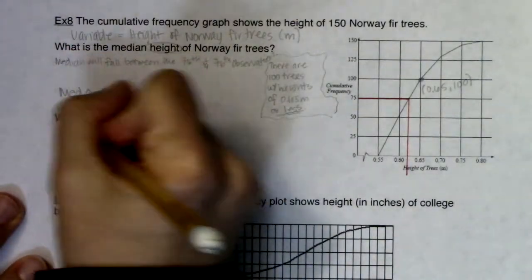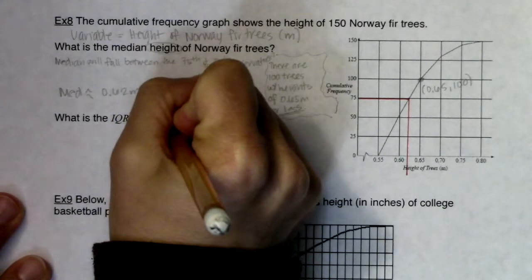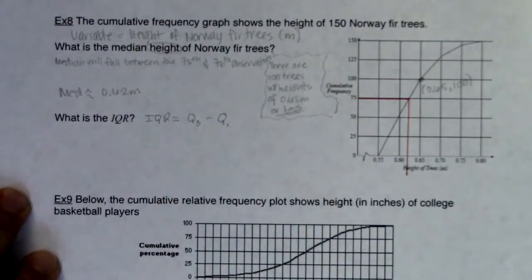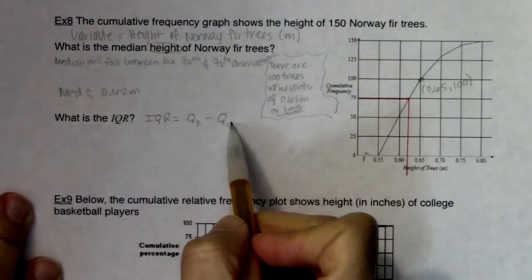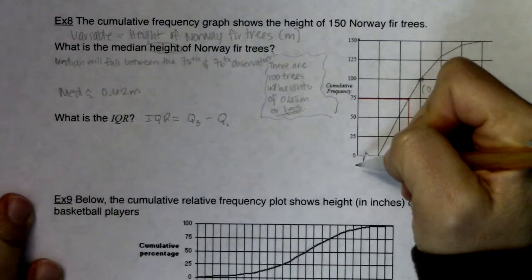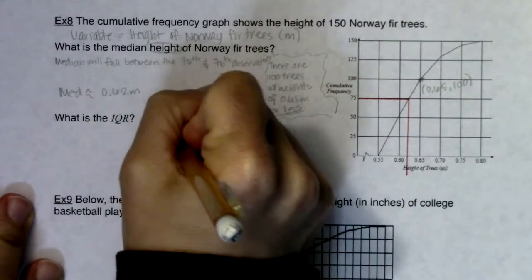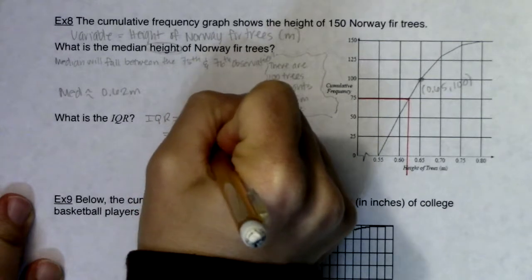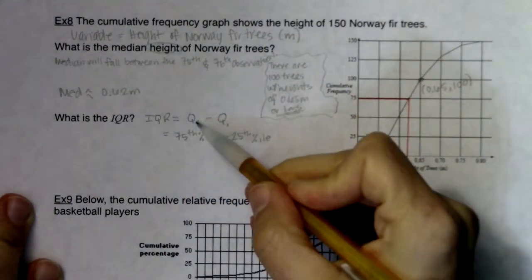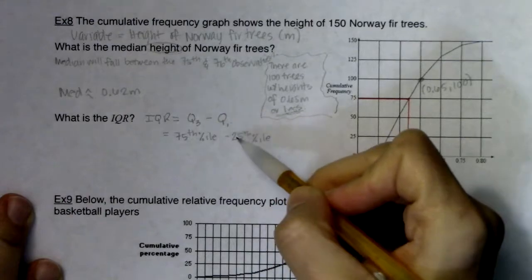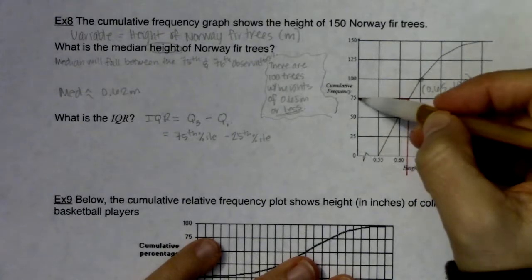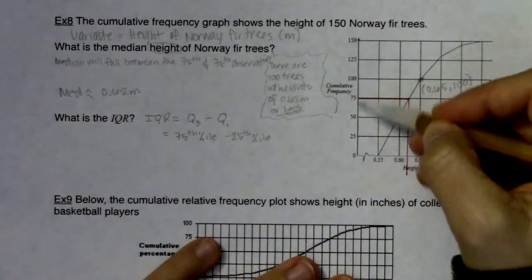Now let's address the IQR. The formula is Q3 minus Q1 — the high quartile minus the low quartile. When working with cumulative graphs, you're really looking at percentiles, so I want to rephrase this as the 75th percentile minus the 25th percentile. The third quartile equals the 75th percentile; the first quartile equals the 25th percentile.